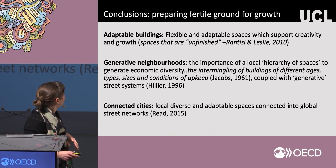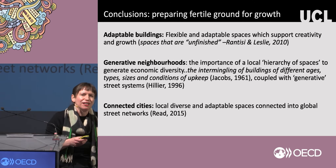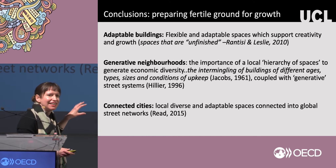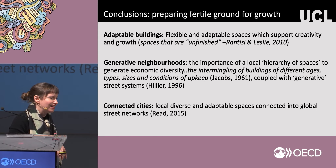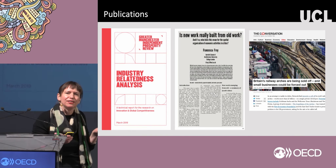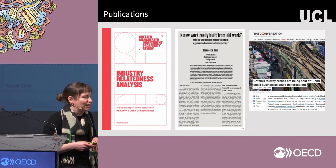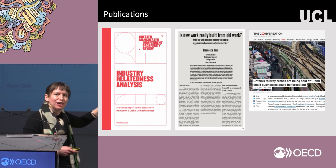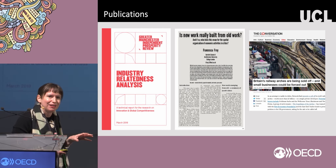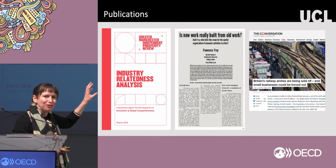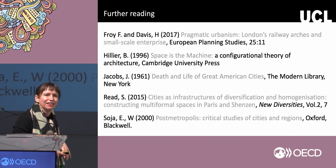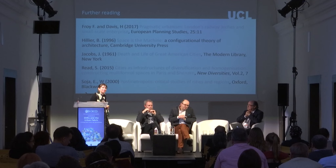To conclude, hopefully I've shown you that there's a mix required between adaptable buildings, generative neighbourhoods, and global connectivity. I've been feeding some of these ideas as policy recommendations into Greater Manchester's Prosperity Review, which they've been doing as part of their industrial strategy. If anybody wants to read more information, this is available online. We've also been campaigning in the UK on behalf of the railway arches, which have been sold off to a private developer, so there's been a lot of talk about their value as commercial spaces. I'll leave you with some background reading if you're interested — hopefully the presentation will be made available afterwards. Thank you.